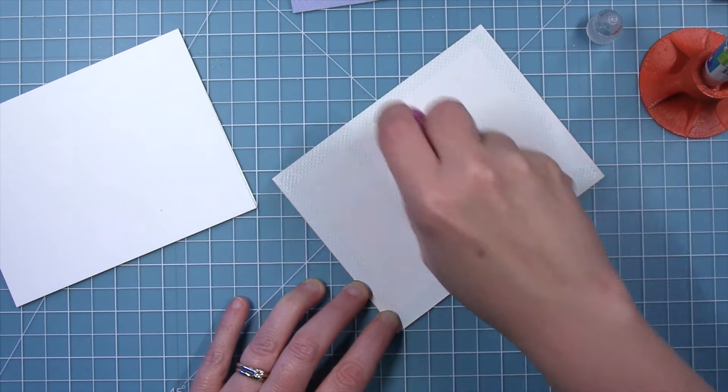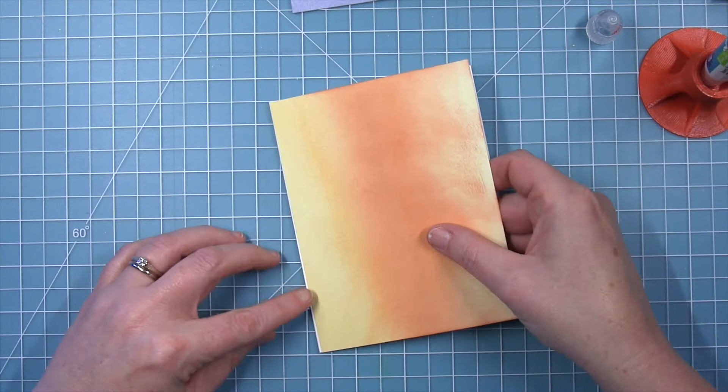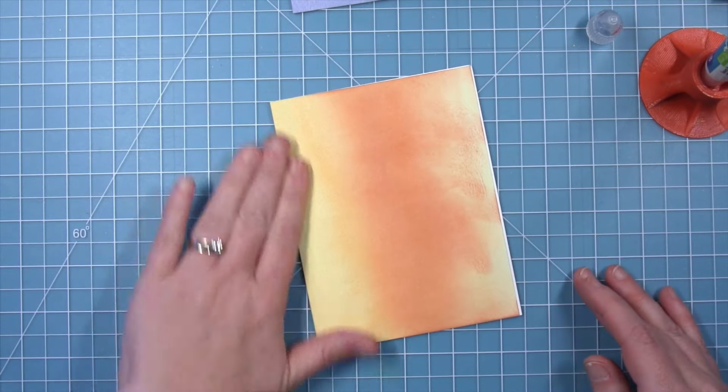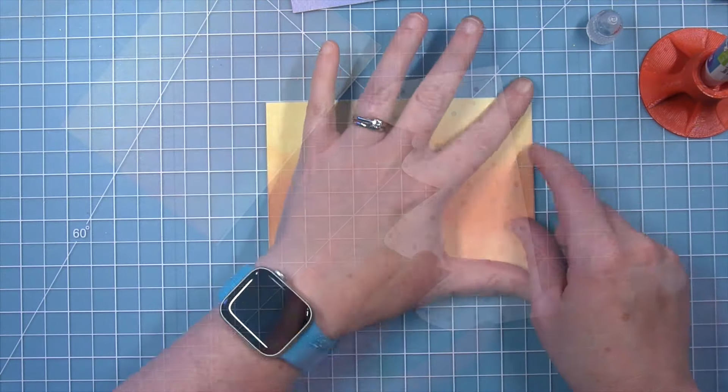So I'm taking my yellow watercolor wishes paper that I ink blended with the wild rose ink and I'm going to go ahead and add that to my card base.